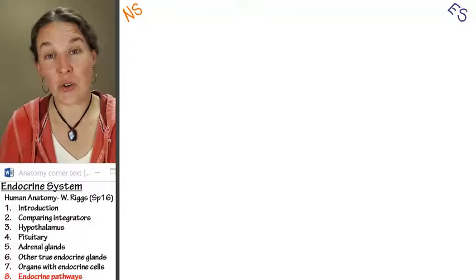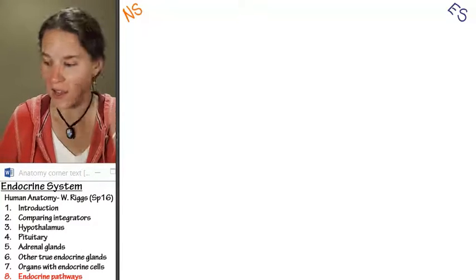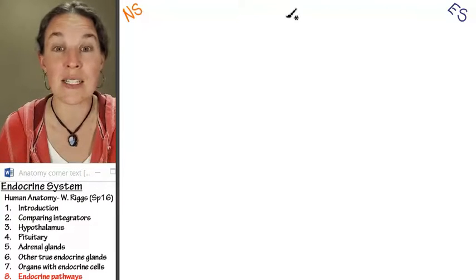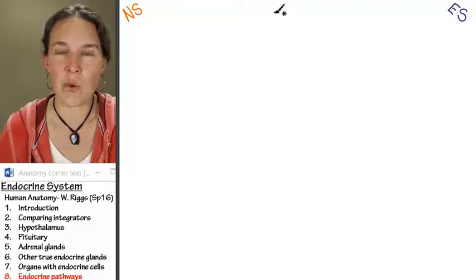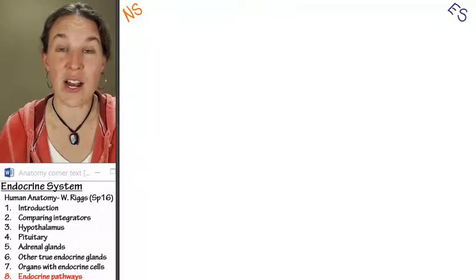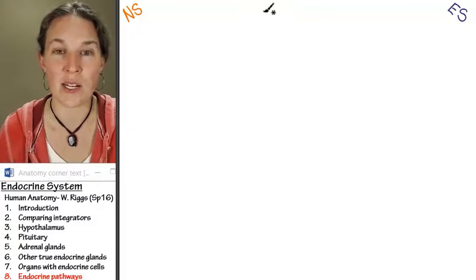Comparing and contrasting these two kinds of pathways, that like I should write my exam right now because that's a phenomenal exam question. A five pointer would be compare and contrast nervous and endocrine pathways. Somebody remind me that I said that so I can actually put it on the exam.